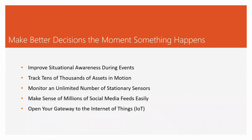To make better decisions, you need to understand the current situation on the ground during an emergency event. You can track events in real time using GIS software, monitor assets at the incident, and monitor an unlimited number of stationary sensors. Our GIS platform enables us to make sense of millions of social media feeds and open a gateway to the internet of things, pulling as much data as needed to understand what's happening in real time.